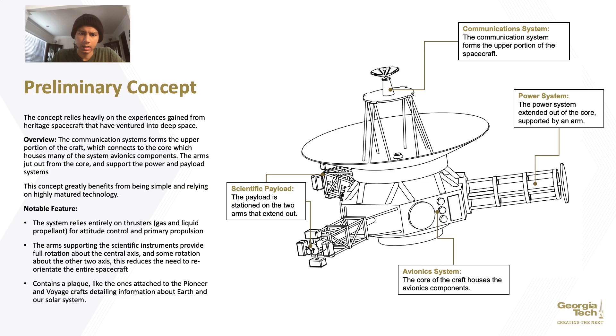The upper portion mainly consists of the communication system. We have the dish and the antenna that's connected to the central hexagonal base, which serves as the housing for the avionics sensors and instrumentation. And that's connected to three structural counting interfaces that support the power and scientific payload equipment. So, a notable feature about the structures that support the scientific payload is that we intend for them to provide rotation, which effectively reduces the need to reorient the spacecraft every time the instruments need to be pointed to a particular point in space.